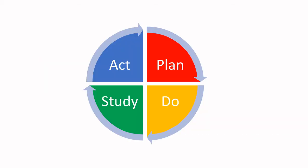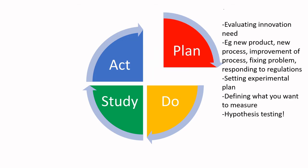In simple terms, the Deming cycle is the Plan Do Study Act cycle. The Plan step is where you're evaluating a new need — whether that is new products, new processes, improvements of processes, fixing problems, or responding to regulations. The main thing is you've identified a pinpoint that has created a need, and therefore you need to set some sort of plan — codify it, detail what you want to do, and define what you want to measure.